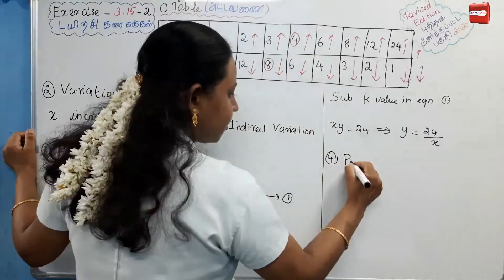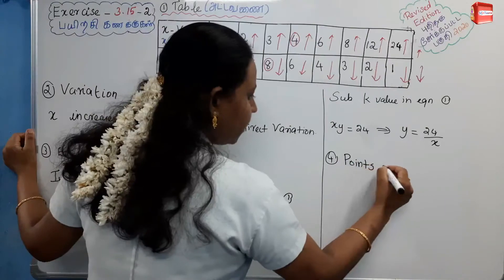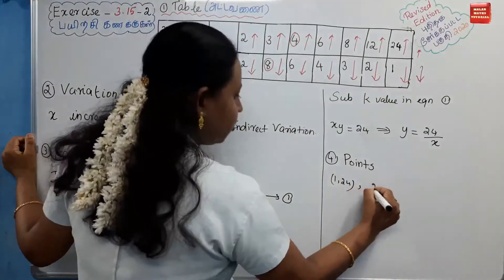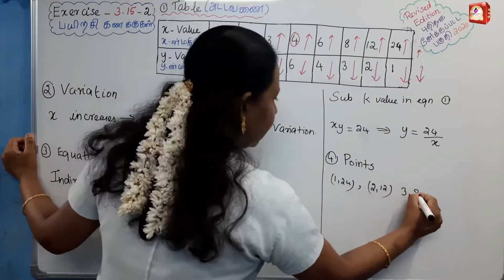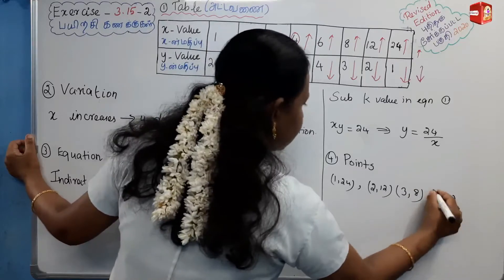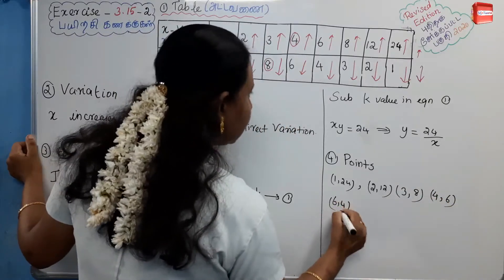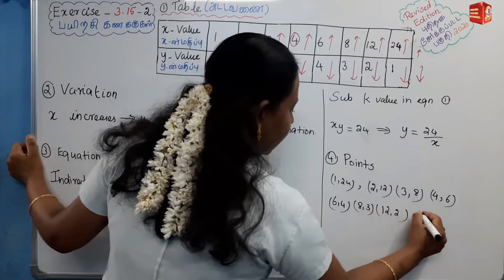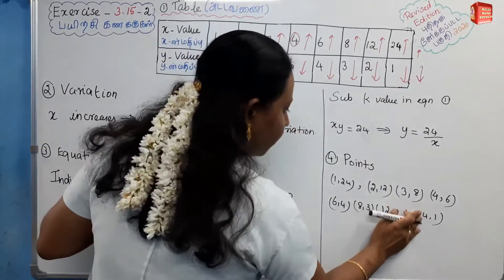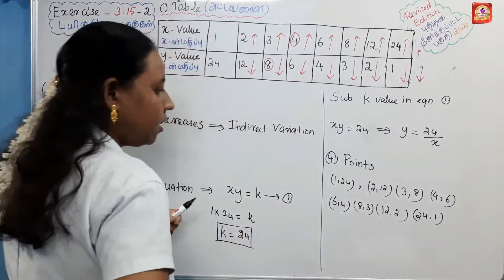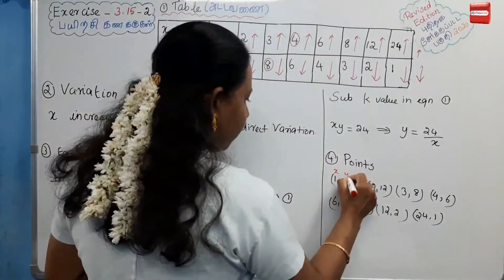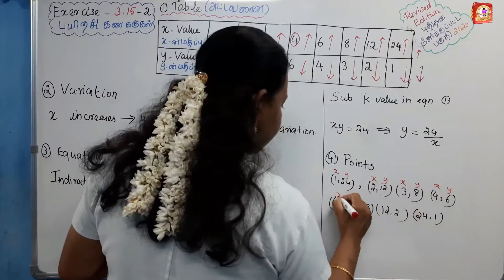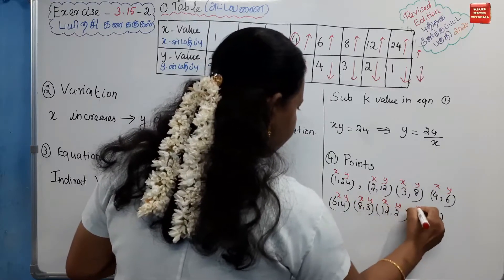Fourth step: plot the points. The coordinate pairs are: (1, 24), (2, 12), (3, 8), (4, 6), (6, 4), (8, 3), (12, 2), and (24, 1). The x values are listed on the left and the corresponding y values on the right.